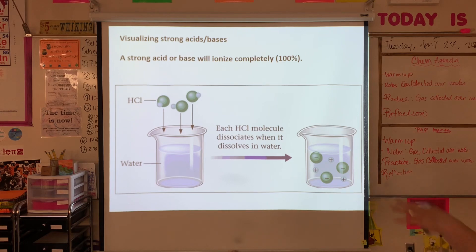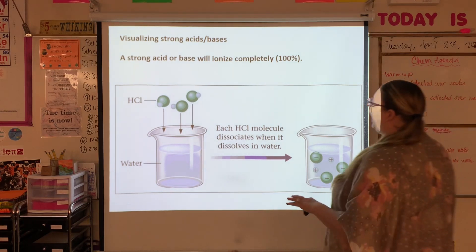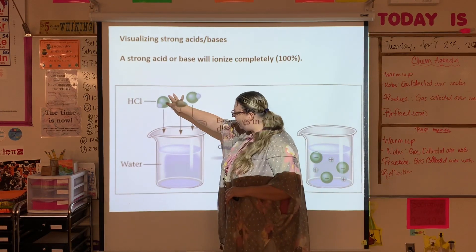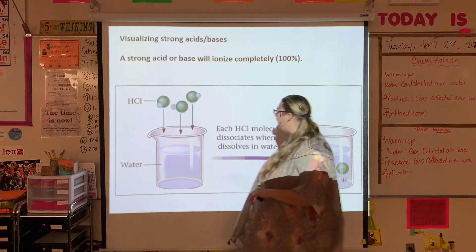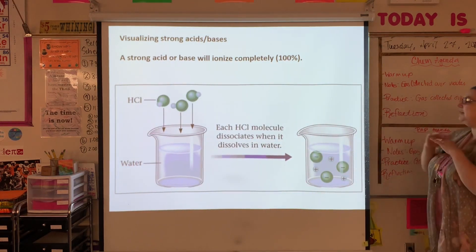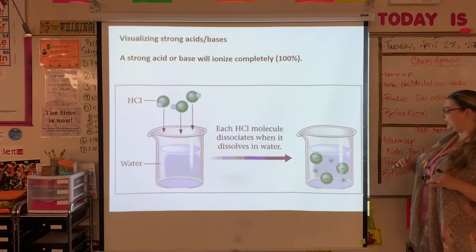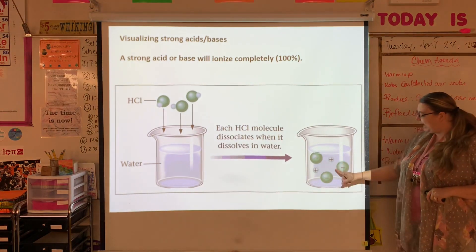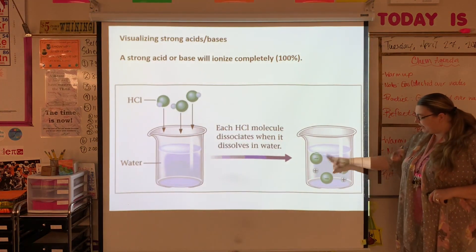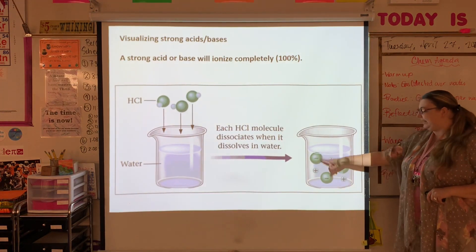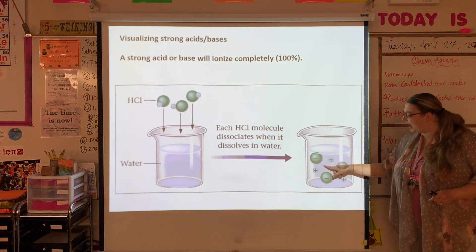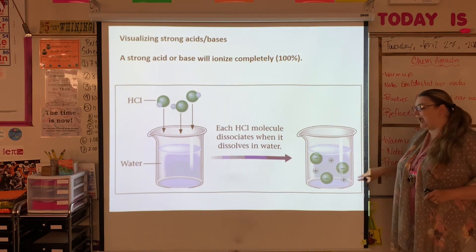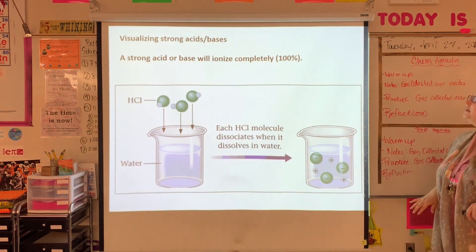If we look at this picture, this is a strong acid — hydrochloric acid, a nice strong acid. If I take HCl and dunk it into water, every single HCl molecule is going to break apart into Cl⁻ and H⁺. That's all I have in here: water, chlorine ions, and hydrogen ions. That's it.